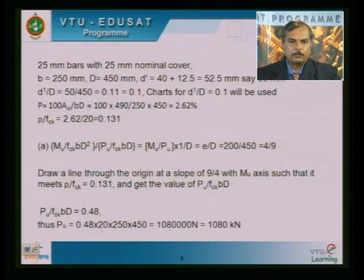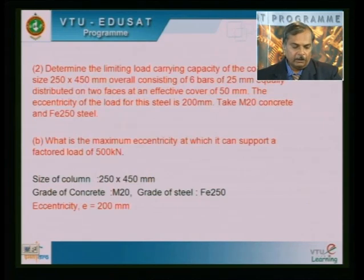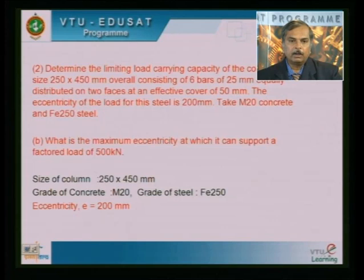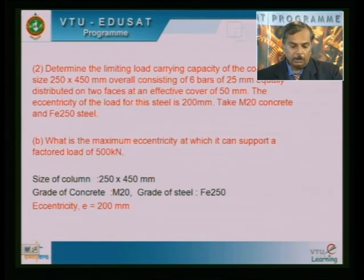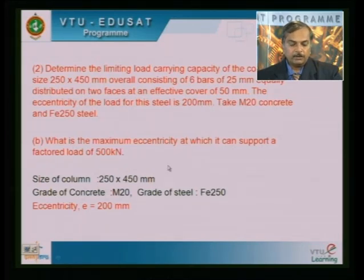For the second part: what is the maximum eccentricity at which the column can support a factored load of 500 kN? Take the same eccentricity line and identify the non-dimensional parameter for Pu = 500 kN. Calculate Pu/(Fck × B × D) = 550,000 / (20 × 250 × 450) = 0.244.